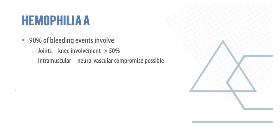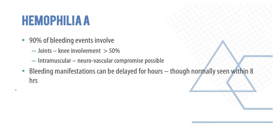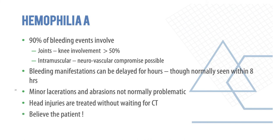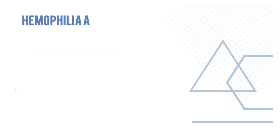Ninety percent of bleeding events involve joints like the knee; intramuscular neurovascular compromise can also happen. Bleeding manifestations can be delayed for hours, though normally seen within eight hours. Minor lacerations and abrasions are not typically problematic. Head injuries are treated without waiting for a CT scan. Always believe the patient if they report a history of coagulopathy and investigate accordingly.